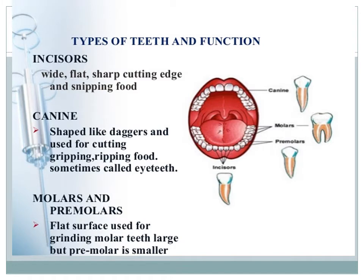Now we will study about the different types of teeth and their functions. In humans, we have four types of teeth: incisors, canines, premolars, and molars. Mammals and especially humans have different kinds of teeth — teeth which are different in shape. Therefore they are called heterodont. In lizards and frogs, they have similar kinds of teeth, so they are called homodont.